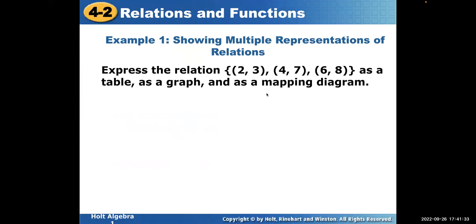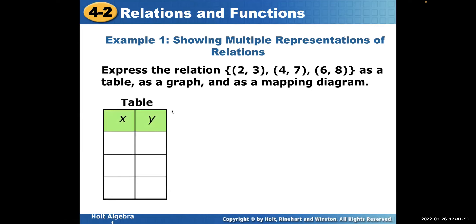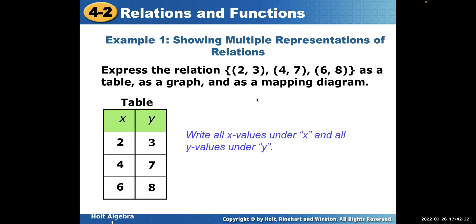This time we're going to take a relation and put it in a table, a graph, and a mapping diagram. For the table, we plug in our X values and Y values. The first number of each ordered pair — 2, 4, and 6 — are our X values. The Y values are what's left: 3, 7, and 8. So 2 and 3 go together, 4 and 7 go together, and 6 and 8 go together. All X values go under X and all Y values under Y.